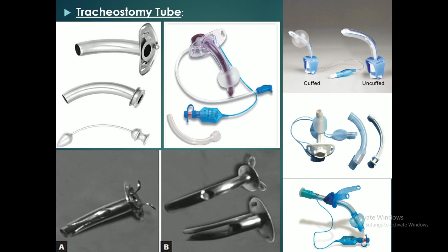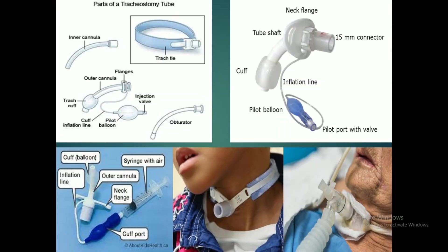Hello friends, today I will be talking about different types of tracheostomy tube. We can see different parts of a tracheostomy tube: the outer cannula, inner cannula, obturator. Different parts of the outer cannula are the neck flange — you can see the neck flange here — tube shaft, cuff, inflation line, pilot balloon, and pilot port.